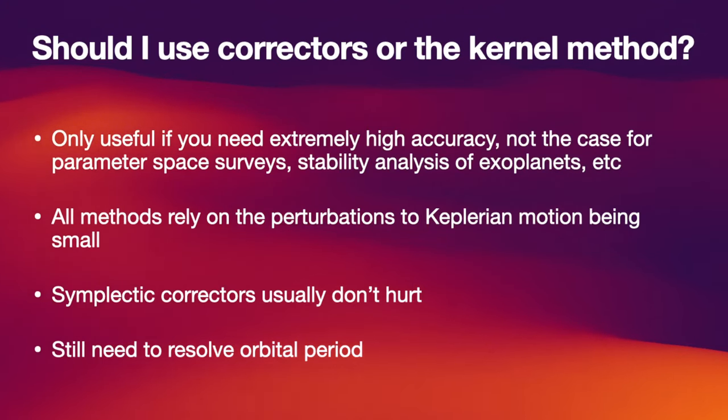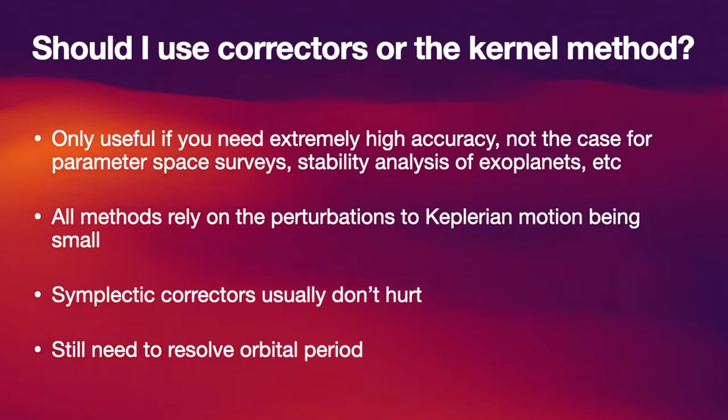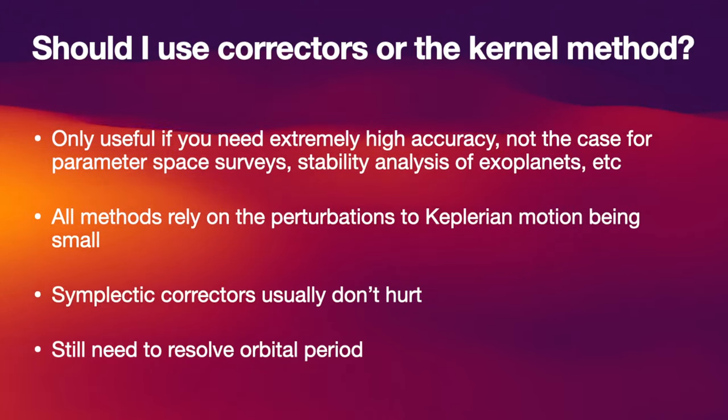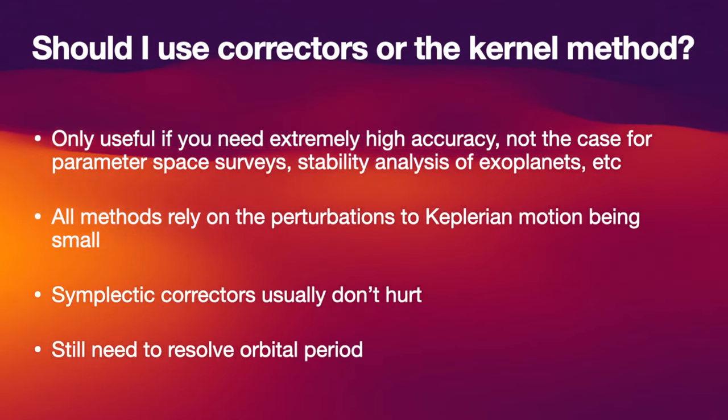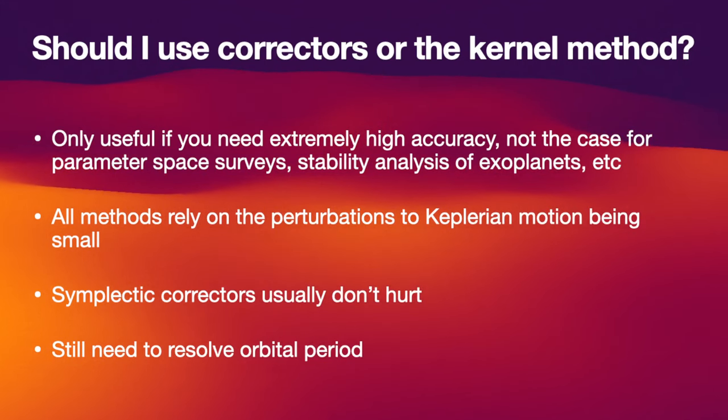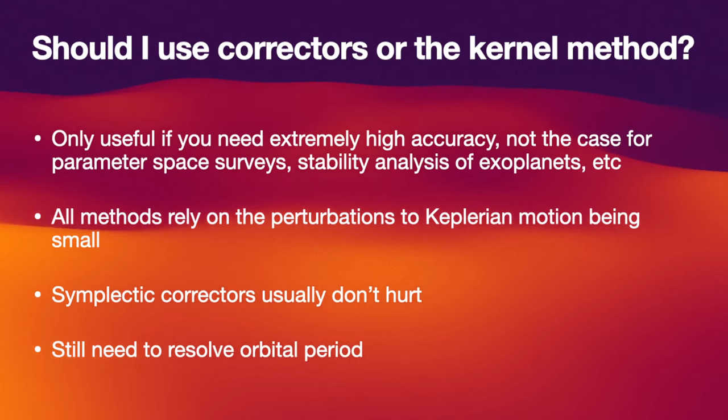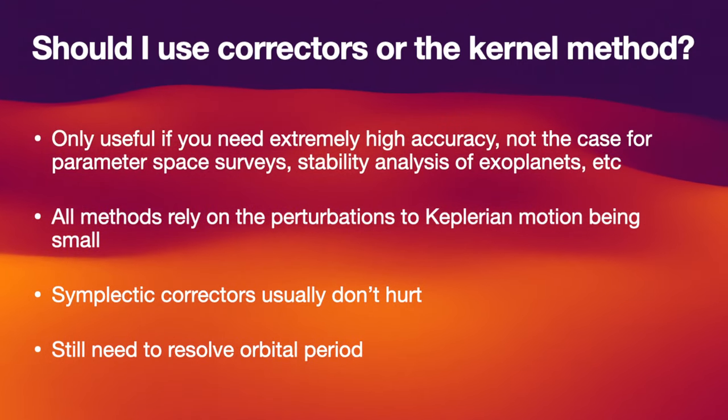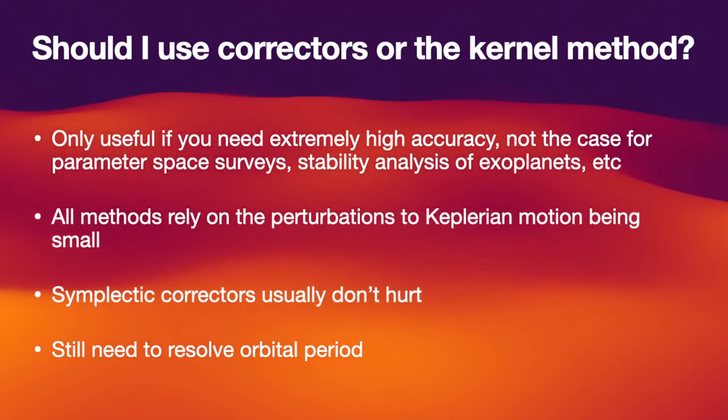You only need this high accuracy for very specific cases. Cases where you don't need them are large scale parameter space surveys that you might run when you want to find out if your newly discovered exoplanetary system is stable or not. In those cases, you really do not care about the accuracy of an individual simulation that much. In general, you need to know the initial conditions really well for a high accuracy simulation to be even meaningful. Otherwise, you can just run an ensemble of simulations that have similar initial conditions, and then in a statistical sense, you will get effectively the same answers out, no matter which method you use.